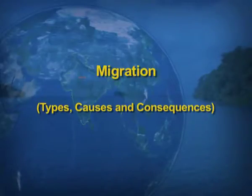Hello viewers. I'm Anita Narula, postgraduate teacher from Kendriya Vidyalaya Air Force Station, Burgaon. The chapter I'm going to take up today is for the students of class 12 from their book, India, People and Economy. The name of the chapter is Migration: Its Types, Causes and Consequences.